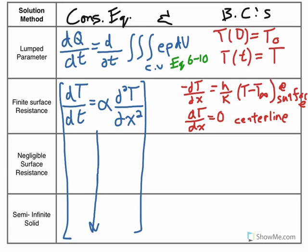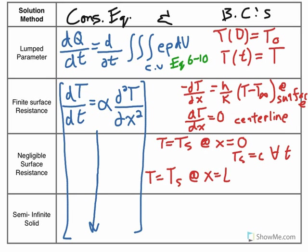So let's take a look at the boundary conditions for negligible surface resistance. The first one is that the temperature at the surface, so at x equals zero, is constant for all time. This little upside down A just means for all. The second boundary condition is that eventually, essentially, the temperature is going to equal the temperature at the surface at some distance in your system for some T greater than zero.